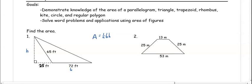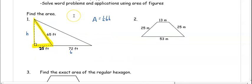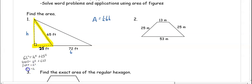We don't know the height yet, so we're going to use this triangle with the side of 65 to find it using the Pythagorean theorem. So we have 65 squared equals h squared plus 25 squared. That gives us 4,225 equals h squared plus 625. When we subtract, we get 3,600 equals h squared, so h is 60.